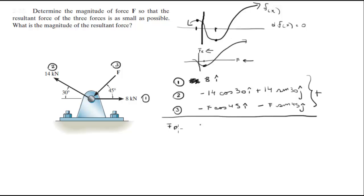So when you add these three up, you're going to get the resultant force, and the resultant force will be equal to negative 0.707f minus 4.124 in the i direction plus negative 0.707f plus 7 in the positive j direction.